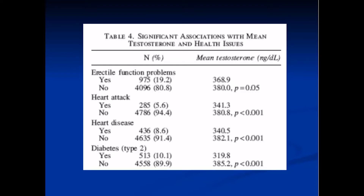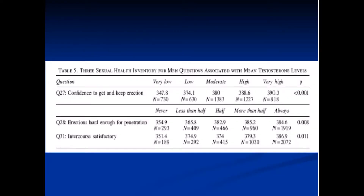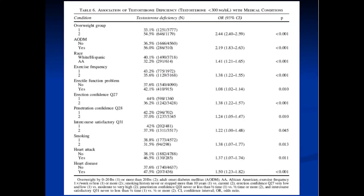Looking at other associations: men who complained of erectile function problems had substantially lower testosterone. Men with a history of heart attack had lower T, those with heart disease had lower T, and those with diabetes had substantially lower T. When looking at the SHIM, not every question correlated with testosterone, but the strongest correlation was the question about confidence to get and keep an erection. Men with highest confidence averaged 390 versus less than 350 for lowest confidence, with a highly significant p-value.